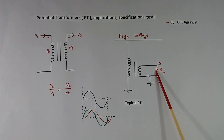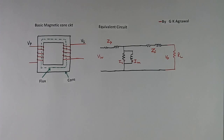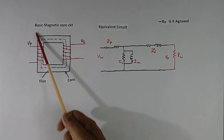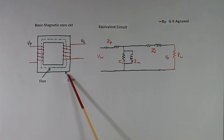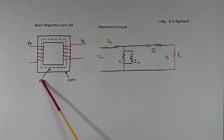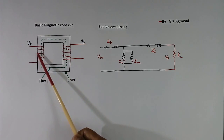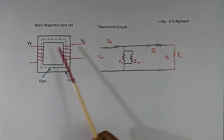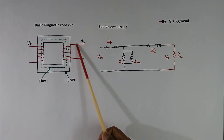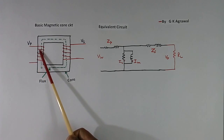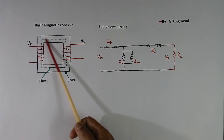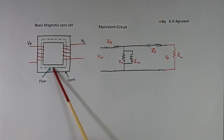The load is connected here. This is the basic magnetic core circuit of the PT. This is the core, this is the primary winding shown in red color, and this is the secondary winding also shown in red color. When we apply voltage across the primary winding, a flux will flow — that flux is shown here in green color.